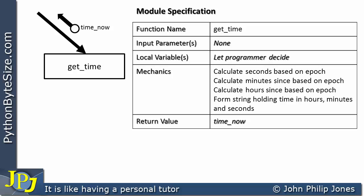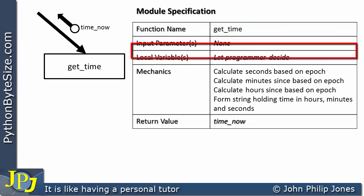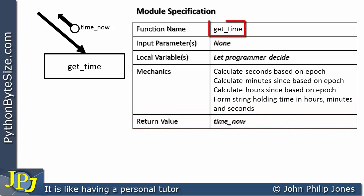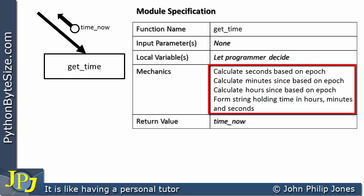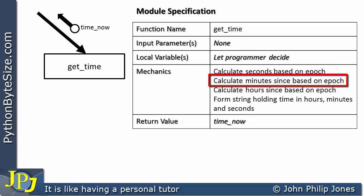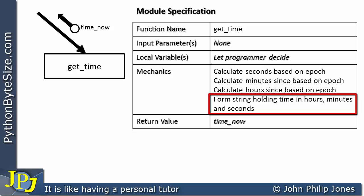We have the usual things with a module specification: a function name, input parameters, local variables, the mechanics, and the return value. The function name is getTime. For input parameters, there are none — hence the word 'none' here. For local variables, I'm going to let the programmer decide whether there's a need for local variables when implementing the mechanics. The mechanics calculate the seconds based on the epoch, then the minutes, then the hours based on the epoch, and then form a string holding the time in hours, minutes, and seconds. The return value is going to be 'time_now', the string holding the hours, minutes, and seconds, which is returned to whatever module calls getTime.